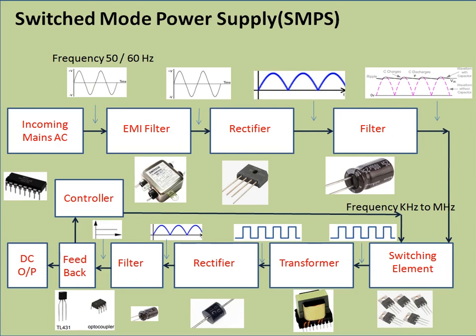After filtering, the DC signal is chopped to a very high frequency signal in the order of kilohertz to megahertz range. This is done because at high frequency the size of the transformer and filter components is drastically reduced. The high-frequency signal is then fed to a transformer, which provides both isolation and the ability to have multiple outputs, and then it is rectified and filtered.